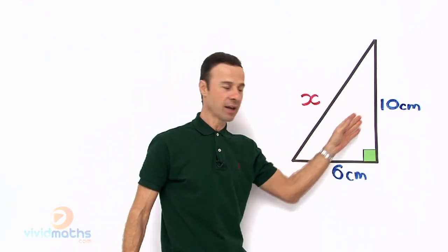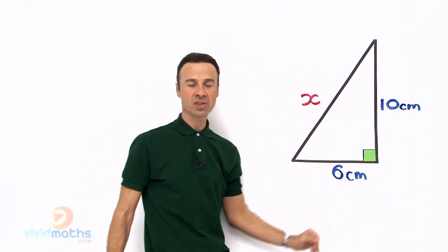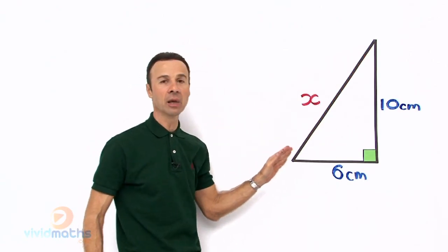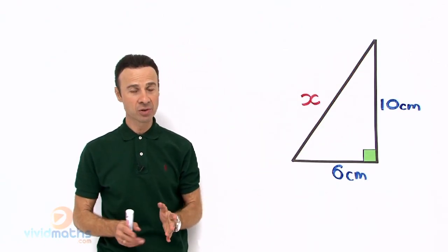Now we are given those two lengths, the 10 cm and 6 cm. What is missing is this long length along here which is called the hypotenuse, that is the long length.